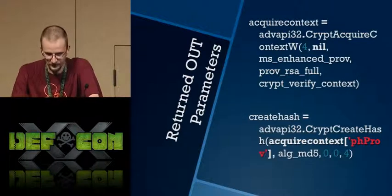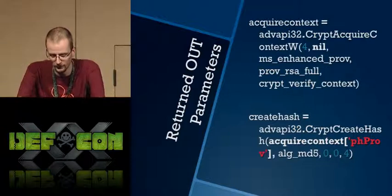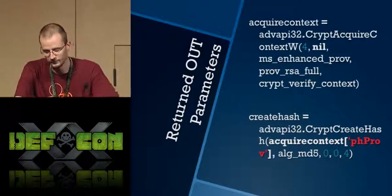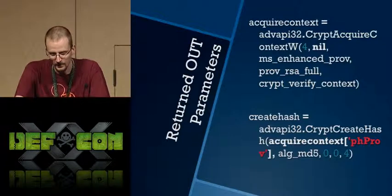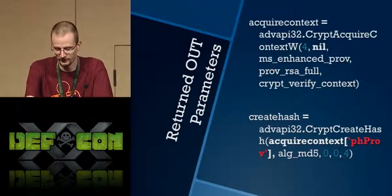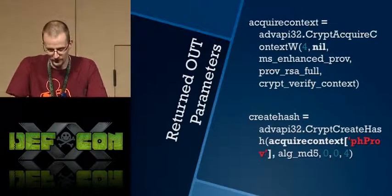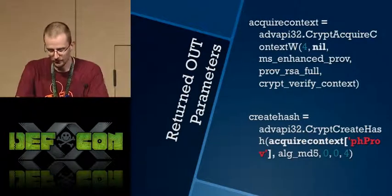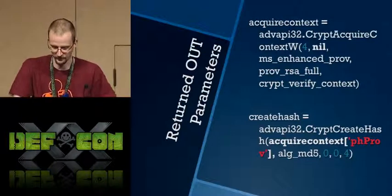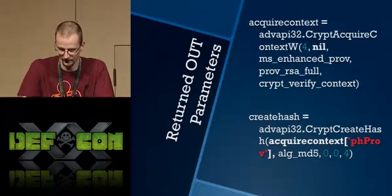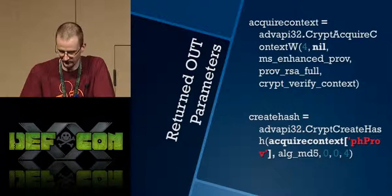Here's an example of some code using Railgun with two different function calls. We acquire the cryptographic context here, and the return value is then used in the next function call. We call CryptAcquireContext, get that hash, make a reference to the phProvider value out of the return, and pass that into the next function call.